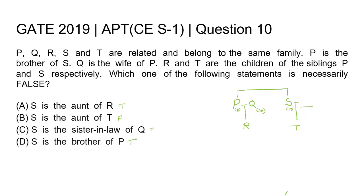So the one option that is necessarily false is option B: S is the aunt of T. That will be the answer.